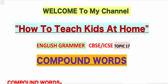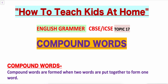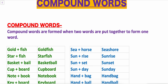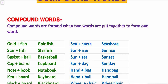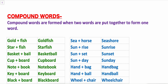What are compound words? Compound words are the words formed when two words are put together. When two meaningful words are added, they form a compound word — one new word made from two.